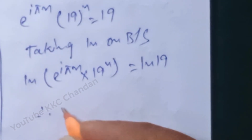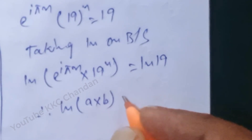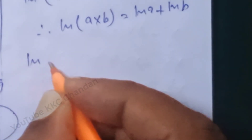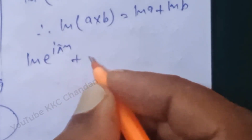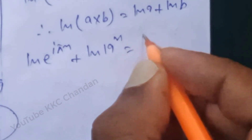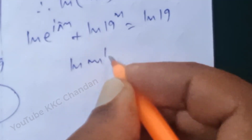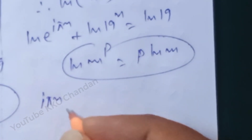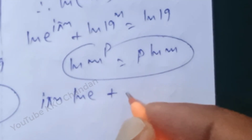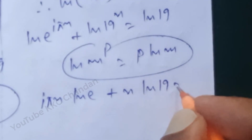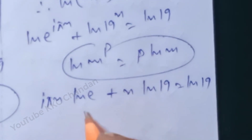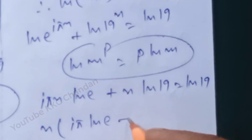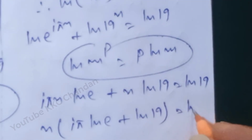We apply the rule ln(a × b) = ln(a) + ln(b), and the rule m^p written as p·ln(m). Applying these rules gives us iπn·ln(e) + n·ln(19) = ln(19). Taking n as common factor: n(iπ·ln(e) + ln(19)) = ln(19).